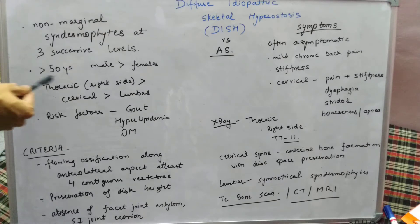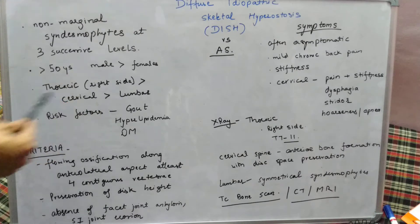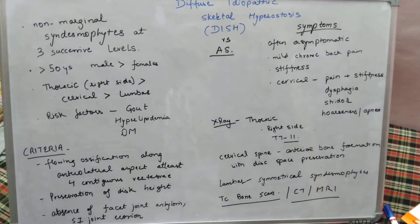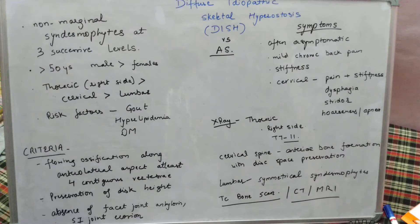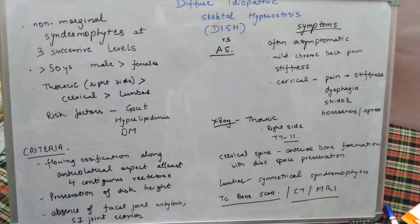In terms of demographics, DISH is seen in patients more than 50 years of age and is more common in males. The most commonly involved site is the thoracic spine, followed by cervical and lumbar. In the thoracic spine, the right side is most commonly involved because on the left side the pulsatile aorta prevents formation of syndesmophytes, making it asymmetric. In cervical and lumbar, syndesmophytes are symmetric. Risk factors include gout, hyperlipidemia, and diabetes.